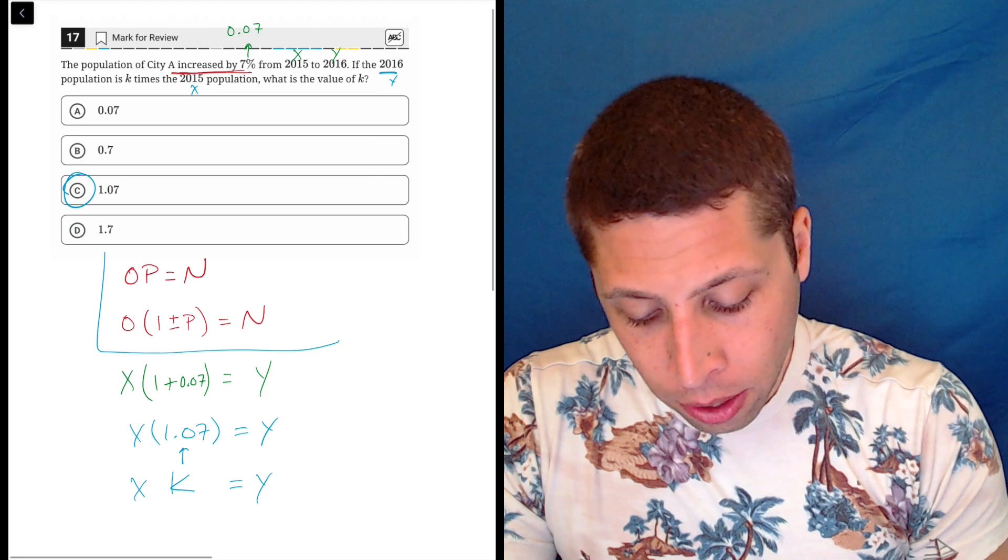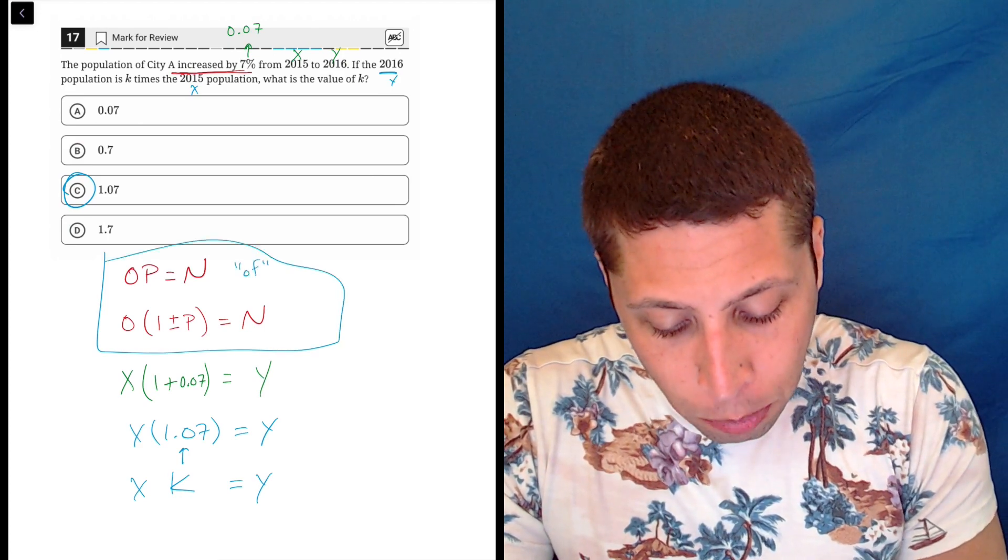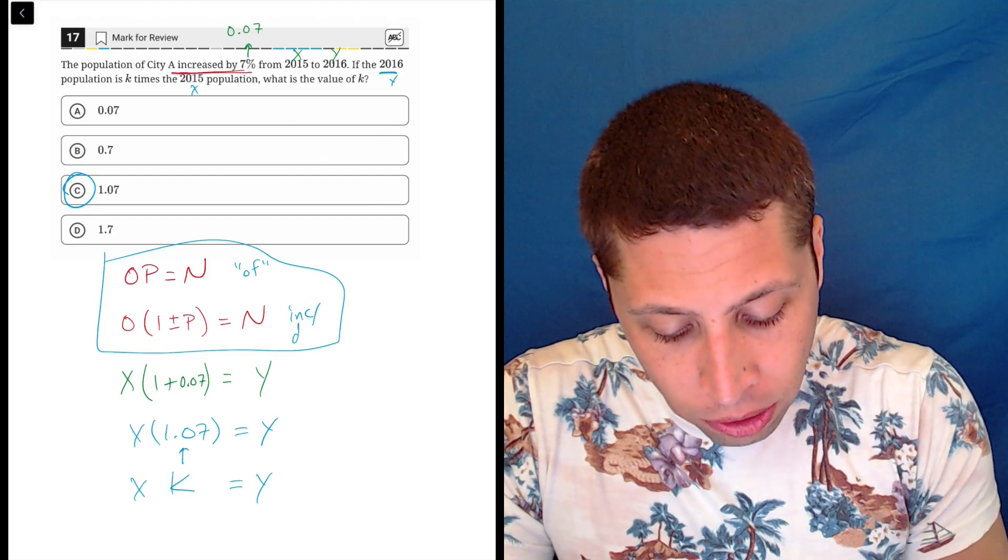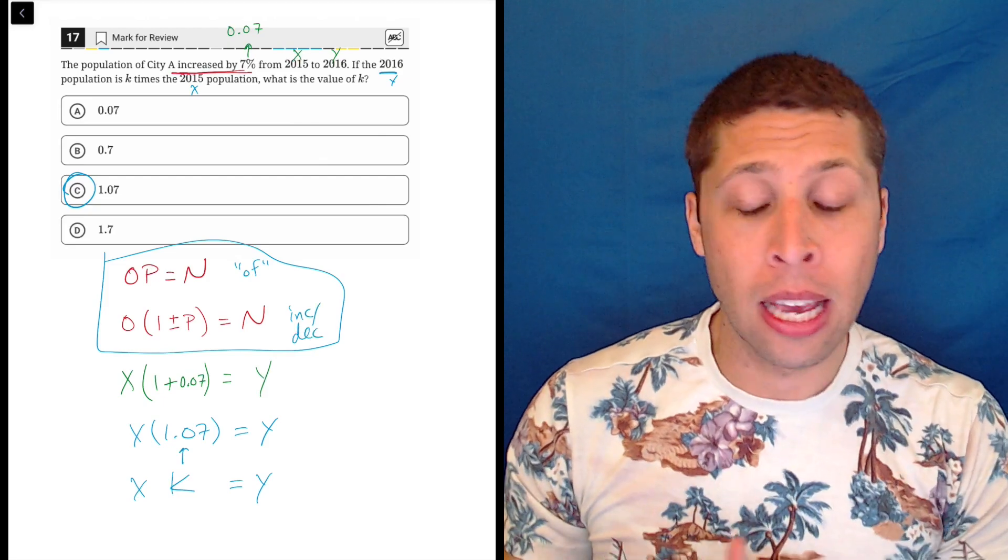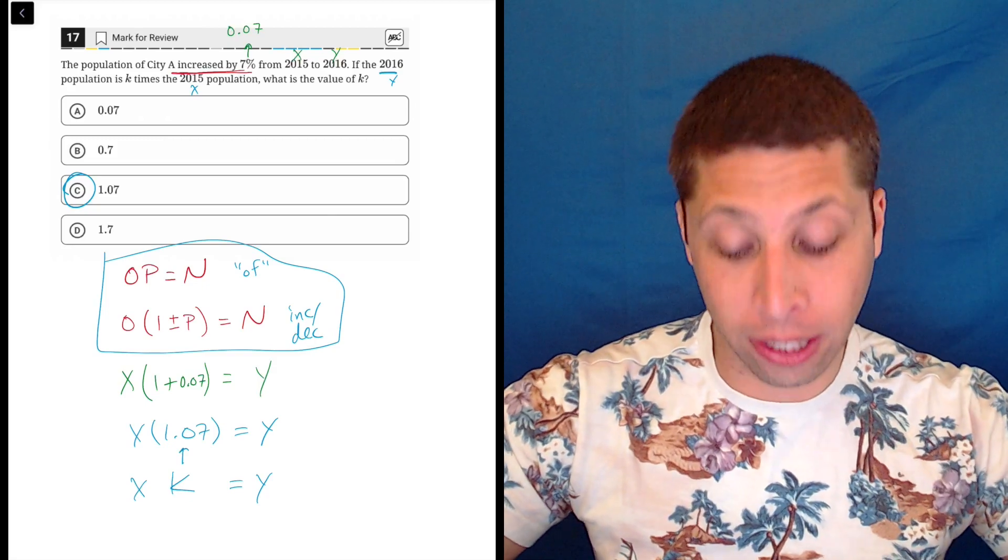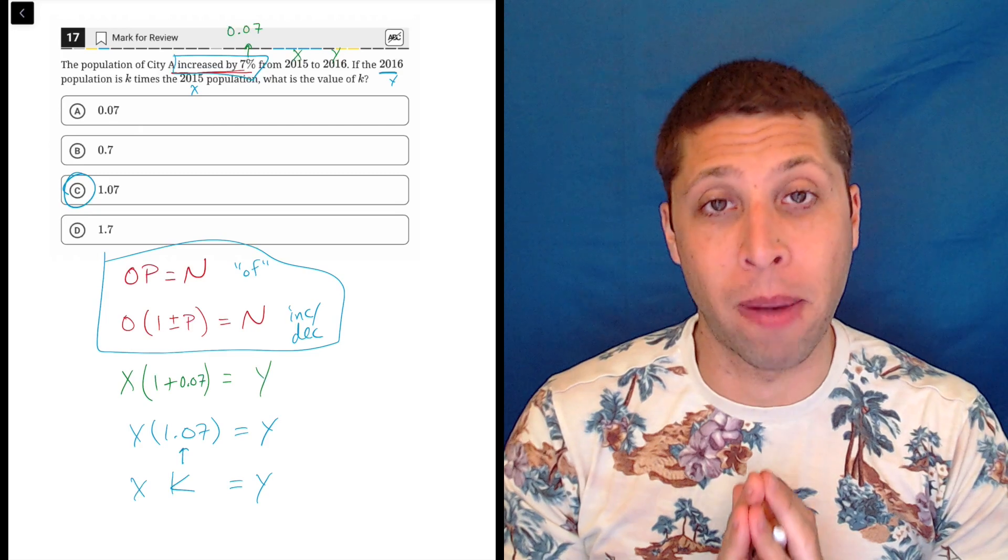And just remember, there's two different versions of the formula. This is when we want the percent of something. This is when there's an increase or decrease. We have to know based on the situation. But luckily, the story will always make it very, very clear. They use the word increase. So that's why I use that 1 plus or minus P formula.